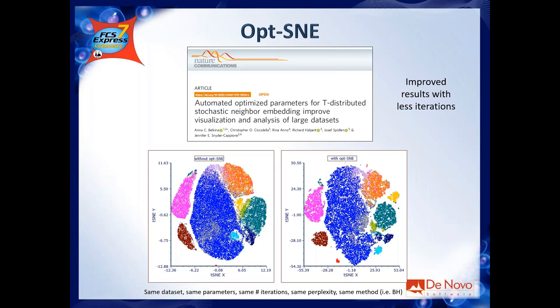Running tSNE with versus without the optimized settings — same number of iterations, same perplexity, same parameters, same downsampling — you can clearly see that the separation with opt-SNE on the right is much better. For example, the light-blue, dark-blue, yellow, and green populations are actual separate islands on the right, while on the left they are still merged together.